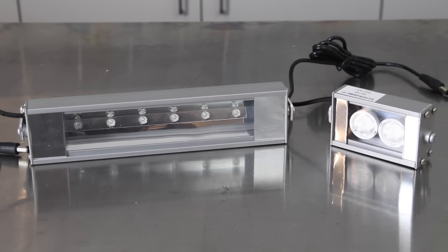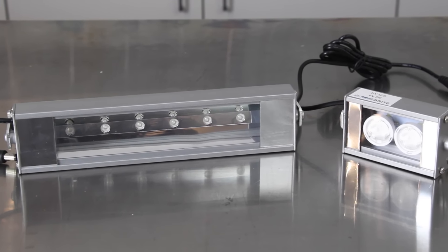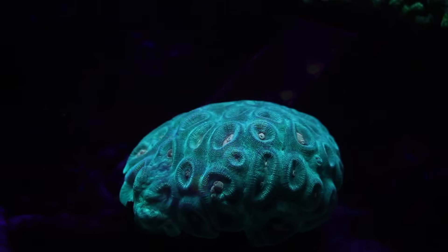Last on our list is a brand new product from Reefbrite which I'm super excited to show you guys. The new UVA LED strip consists of 395 nanometer true UV spectrum LEDs which will literally make your corals glow with color and pop like never before.